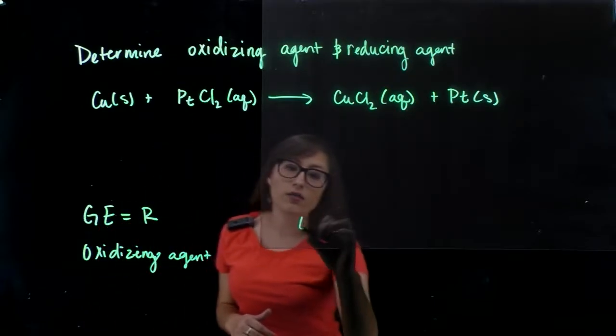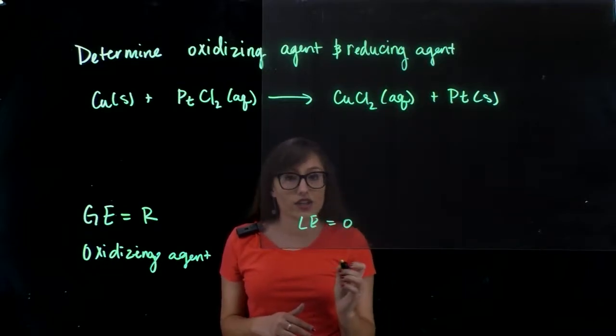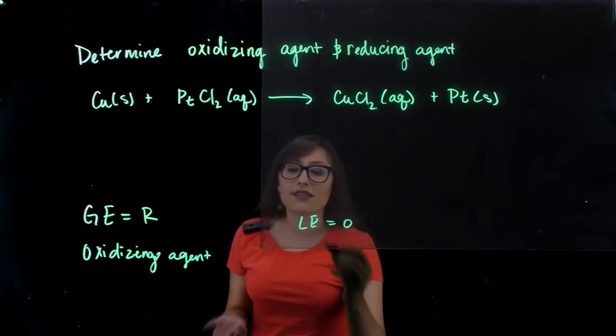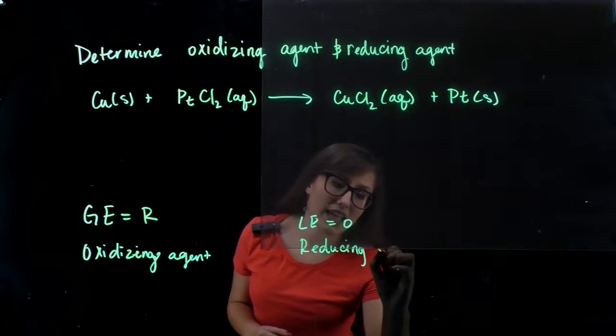And then we have LEO, which is loss of electrons equals oxidation, and whatever is going under oxidation is thus the reducing agent.